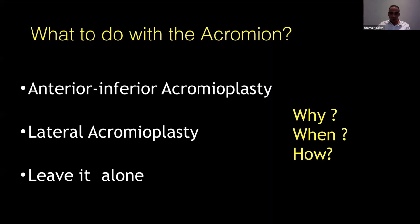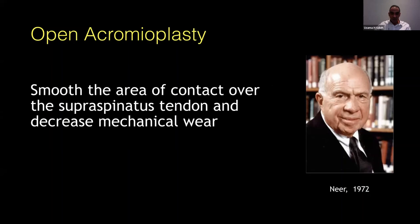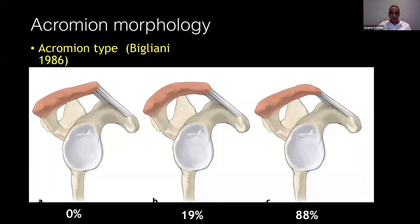Going back to history, Dr. Neer in 1972 started doing open acromioplasty — it was a revolution, because before him it was just acromionectomy. Fourteen years later, Bigliani described the three types of acromion shape and related them to the incidence of rotator cuff pathology and tear. Type III acromion — the hooked acromion — has a high incidence of rotator cuff tear.